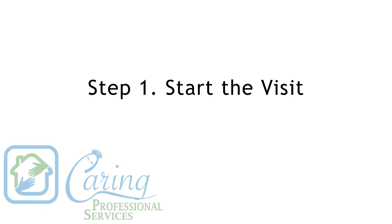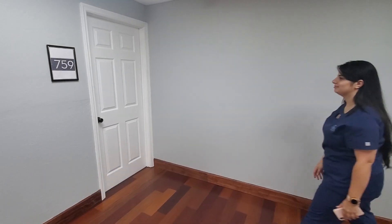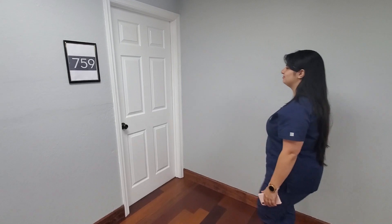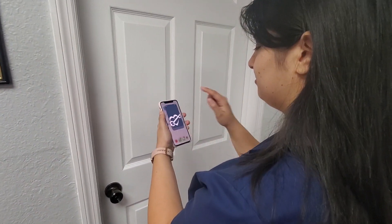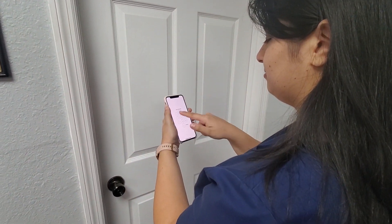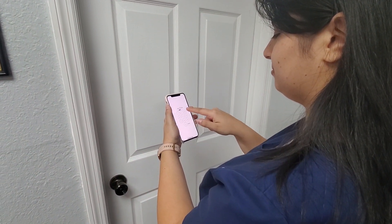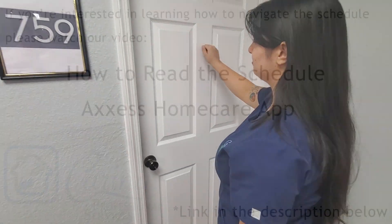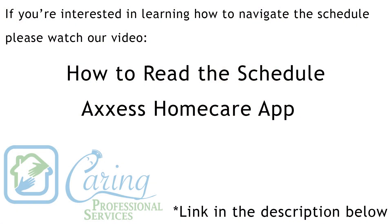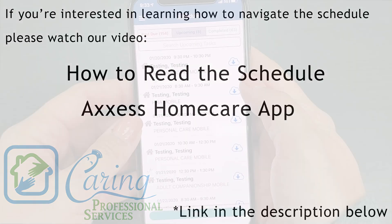Step one: start the visit. When you first arrive at a patient's home you will log into the Access Home Care app. At this point you should have downloaded the app and logged in for the first time, which means you can open the app using your four-digit PIN. If you're interested in learning how to navigate the schedule center, please watch our video on how to read the schedule in the Access Home Care app.